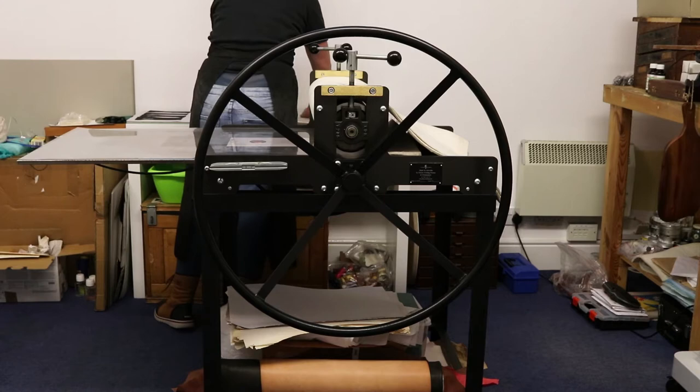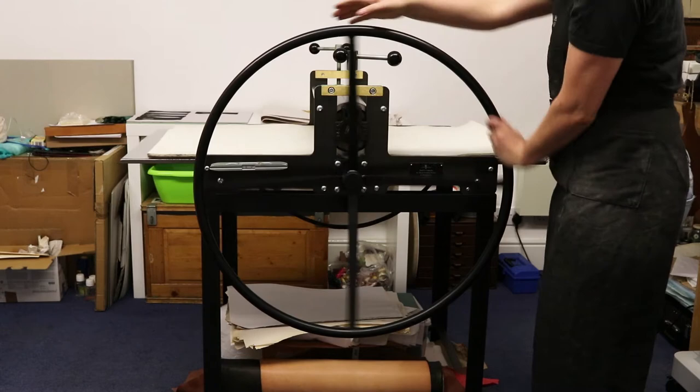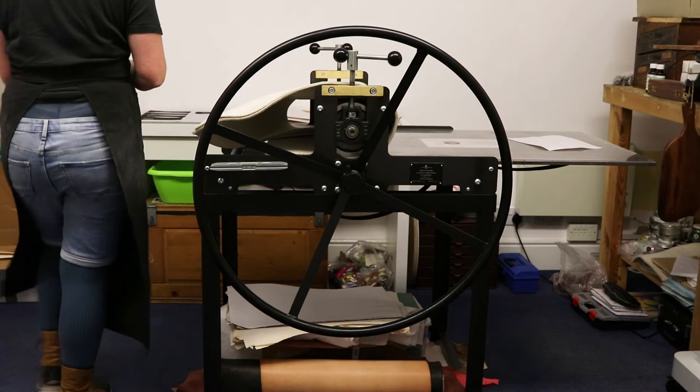At this point, the water needs to be blotted off your paper with newsprint. I do this in two passes. The first one removes the bulk of the water, and the second picks up any remaining water from the paper's surface. Line up your damp paper on your template, lower the felts, and run everything through the etching press.